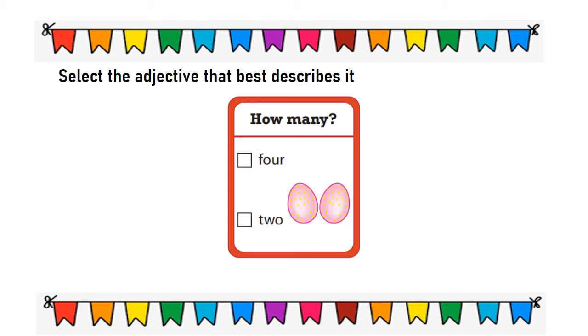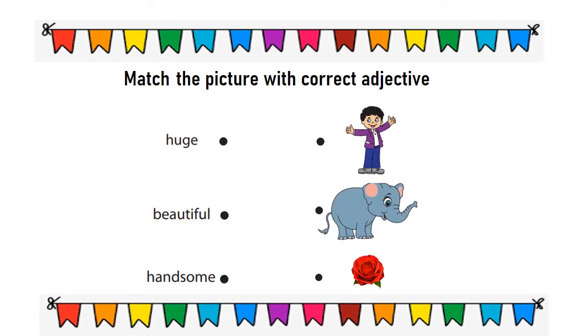How many eggs are there? Four or two? There are two eggs. Here two is the adjective. Match the picture with correct adjective: huge, beautiful, handsome. Huge elephant, beautiful rose, handsome boy.